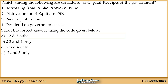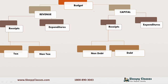Dividend on government assets is considered in the revenue part, not the capital part. This diagram has been explained well in our lectures. If you study the revenue receipts part, especially the non-tax part — the dividend earned is in the non-tax category. So dividend on government assets is revenue, not capital.